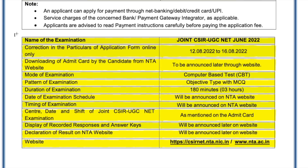Now for important and tentative dates: the correction window for the application form is open from 12th to 16th of August — if you made a mistake while filling the form you can make corrections then. Remember that some changes are not allowed, such as your name, date of birth, father's name, and phone number. Things like educational qualification can be corrected during this window.